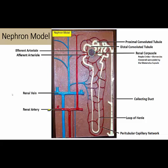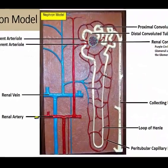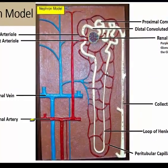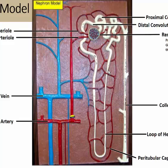Here we have our nephron model. We will be looking at the pathway that blood will be taking through the nephron. The blood will enter at the renal artery and then enter the renal corpuscle through the afferent arteriole.